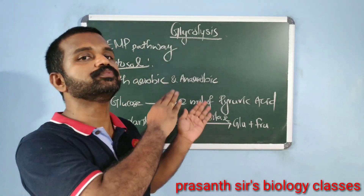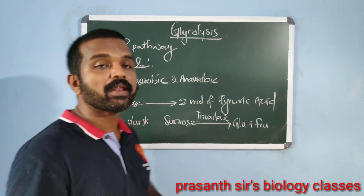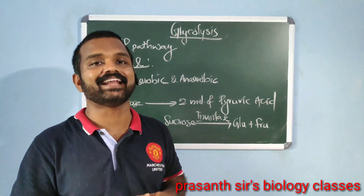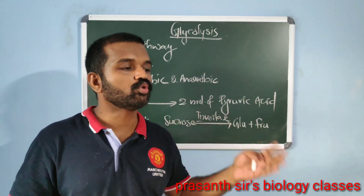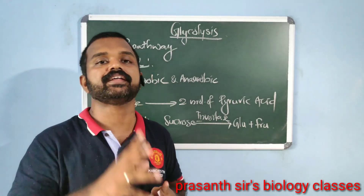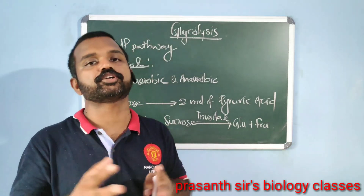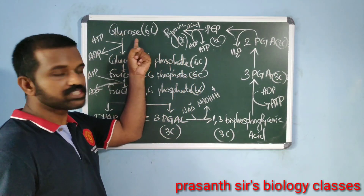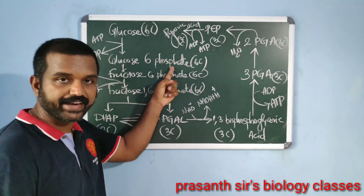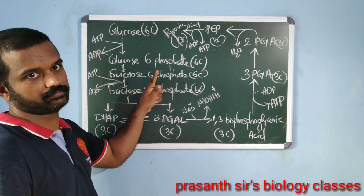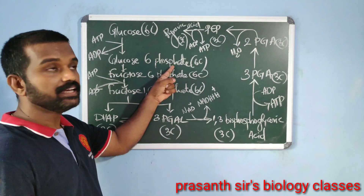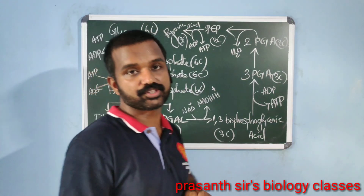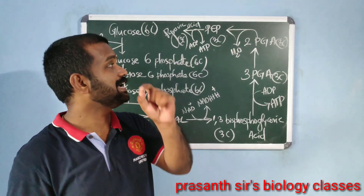In plants, sucrose (a disaccharide) is first hydrolyzed into glucose and fructose by the enzyme invertase, and both glucose and fructose readily enter the glycolytic pathway. In the glycolytic pathway, glucose is first phosphorylated to glucose-6-phosphate. The phosphate donor is ATP, which becomes ADP. The enzyme involved in this step is hexokinase.